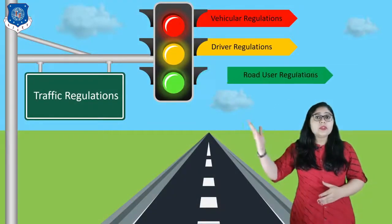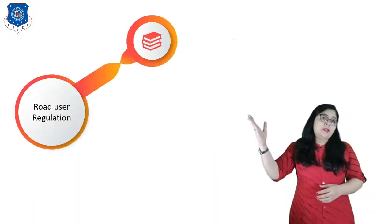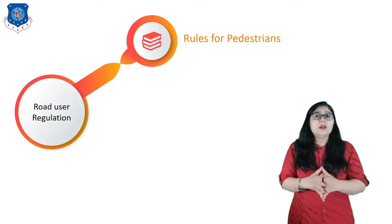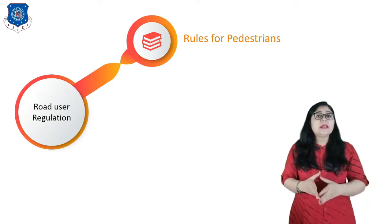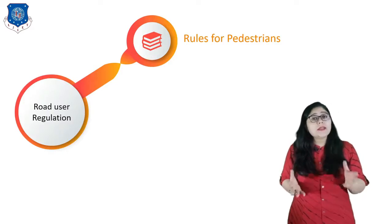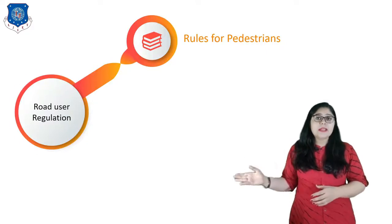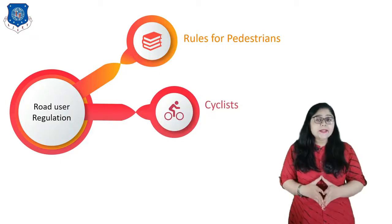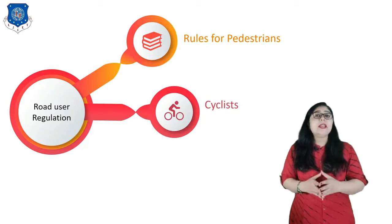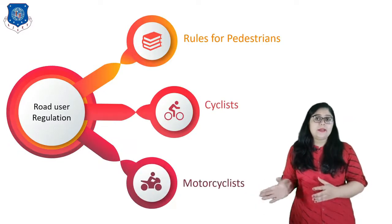Next is Road User regulations. Here, we have to also think for pedestrians at crossroads where pedestrians are crossing. Always walk on footpath. Where there is no footpath, walk on the right side margin of the road so that you can see the traffic coming in the opposite direction. Next is about Cyclists — we should provide separate routes for cyclists to ensure their safety and comfort on the road. Last but not least, we should provide facility to motorcyclists.